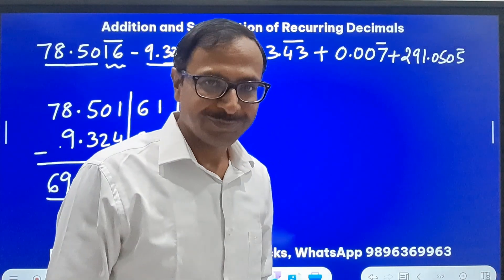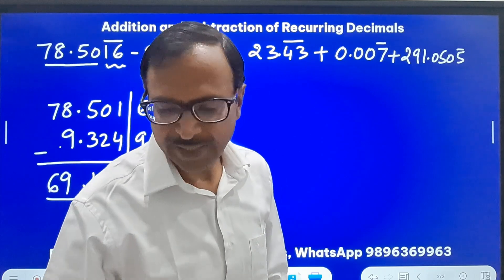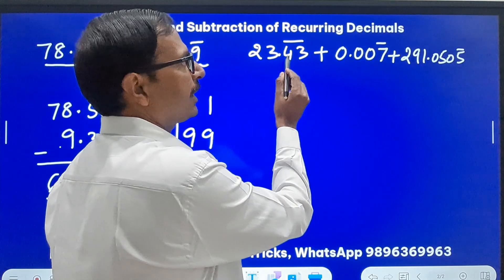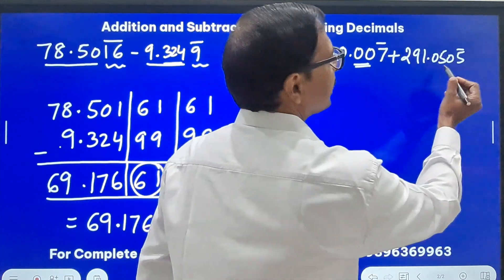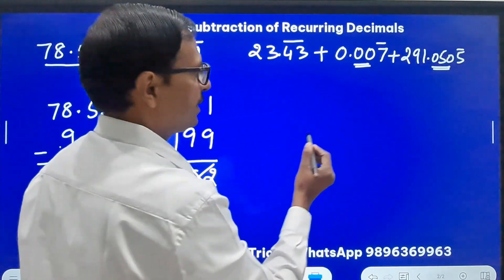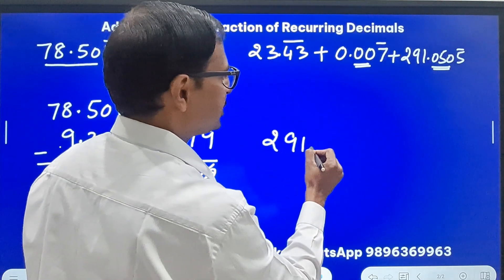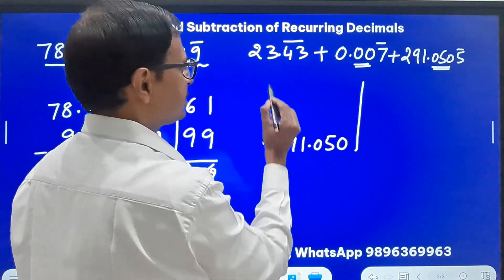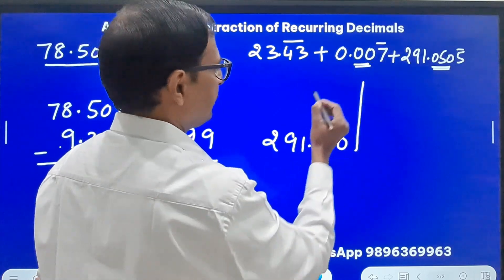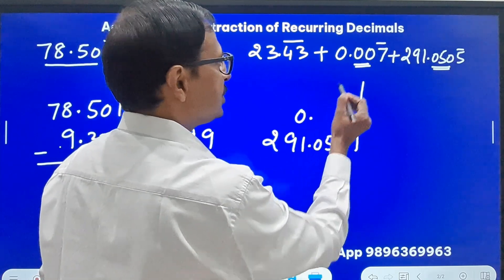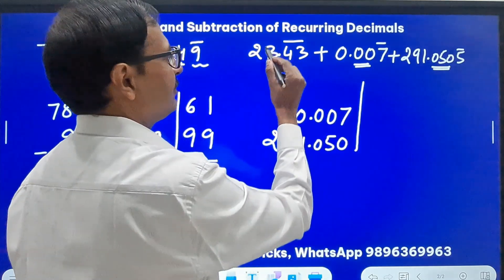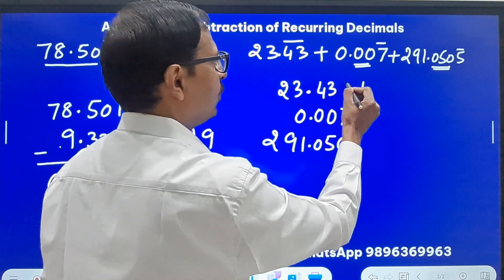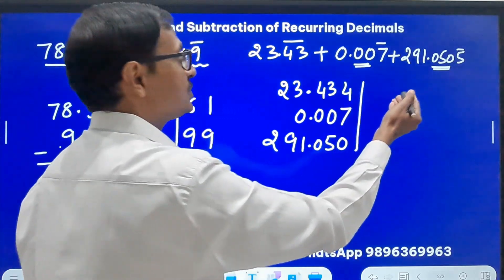Likewise suppose you have to add these big numbers. Now so how do we tackle this question? Let's see. No recurring, non-recurring digits here, we have two non-recurring digits here and three here. So three means that is the number of digits I have to write on the left. So three digits. So first number and the middle number 0.007, so 007, and the first one is 23.434.